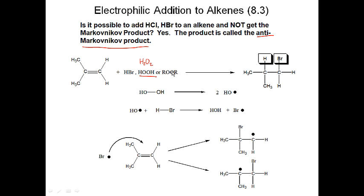We have an initiation step and then propagation steps. When you take hydrogen peroxide or an organic peroxide ROOR and heat them up, they break apart — the two oxygens break apart to give each oxygen one electron, forming either two hydroxyl radicals or two alkoxy radicals. This is essentially the same as initiation in free radical halogenation.